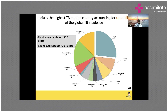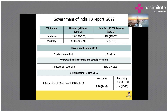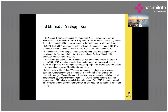Coming back to India: about three million TB cases are estimated epidemiologically, but only two million cases are being reported every year — and that's a big problem. The program used to be called the Revised National TB Control Program and is now called the National TB Elimination Program. The government has set an ambitious target of eliminating TB by 2025, and DOTS centers are now established throughout India.